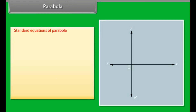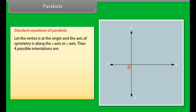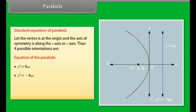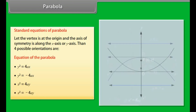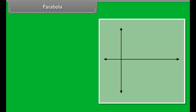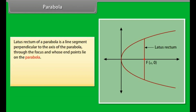Standard equations of parabola. Let the vertex be at the origin and the axis of symmetry along the x-axis or y-axis. Then four possible orientations are: y² = 4ax, y² = -4ax, x² = 4ay, x² = -4ay. Latus rectum of a parabola is a line segment perpendicular to the axis of the parabola through the focus and whose end points lie on the parabola. The length of the latus rectum of the parabola y² = 4ax is 4a.